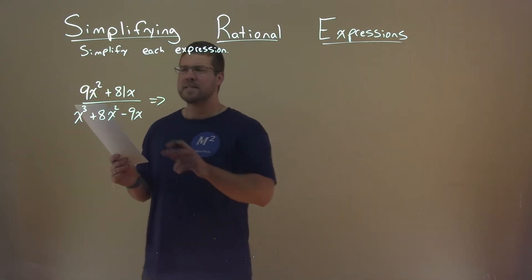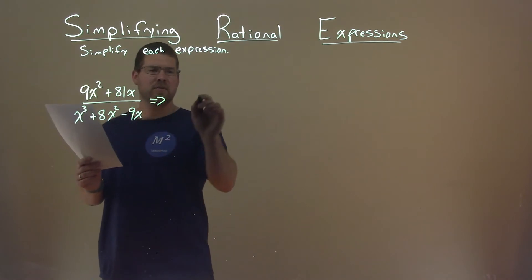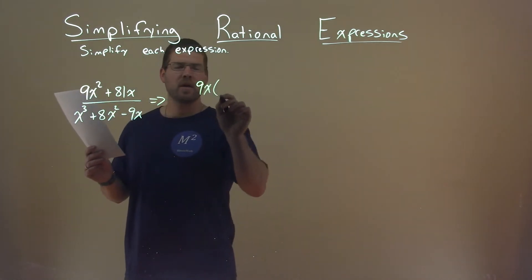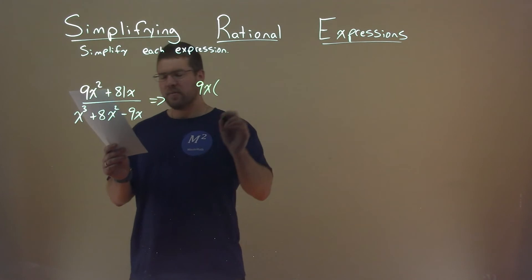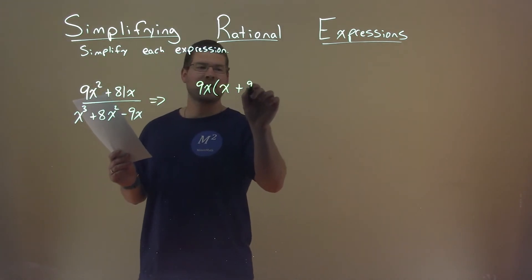Well, in the numerator I see that I can pull out a 9x—there's a 9x in both parts here. So if I pull out a 9x, I'm left with x plus 9.